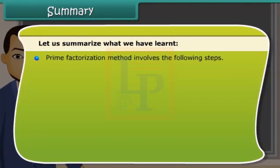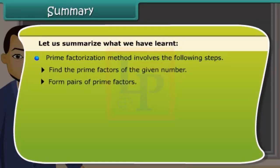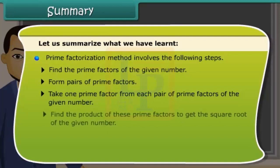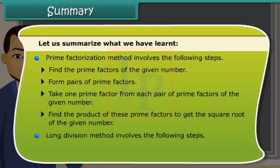Prime factorization method involves the following steps: find the prime factors of the given number, form pairs of prime factors, take one prime factor from each pair of prime factors of the given number, find the product of these prime factors to get the square root of the given number.